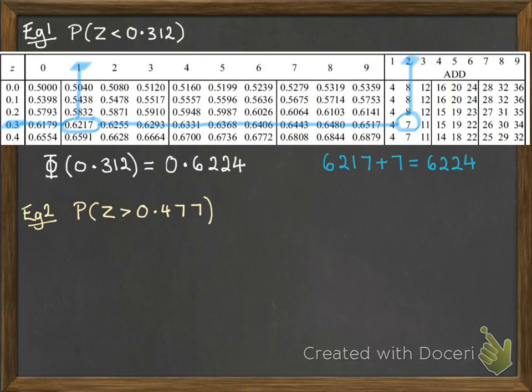So this is the probability that z is more than 0.477. So that will be 1 minus the probability that z is less than 0.477. So 1 minus Φ of it. So let's look up 0.477. So we've got 0.47 and a 7. Let's put those together.